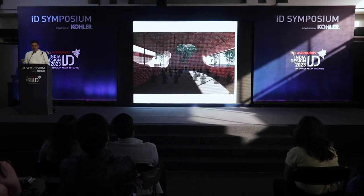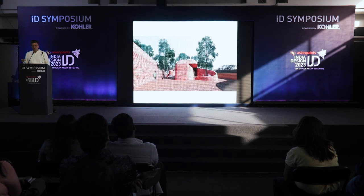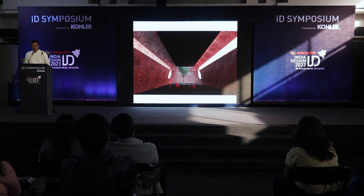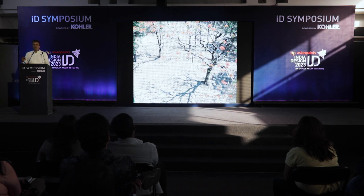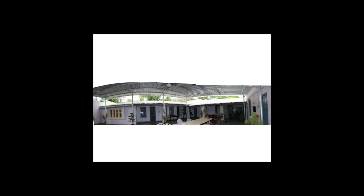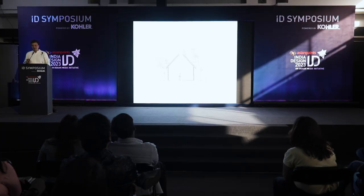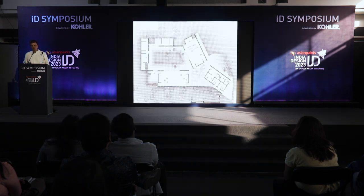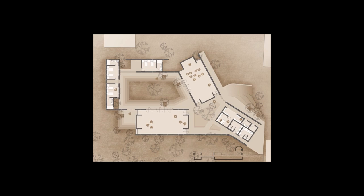Then we realized that while we had responded in form to the trees, the trees were no longer an integral part of the experience once you were inside the structure. We found a clue in a courtyard of a building at lunch — they had covered it and we could see a sliver of greenery through the gap between two roofs. That led us to the idea of flipping the roof so that when you're inside you could look at the foliage outside.